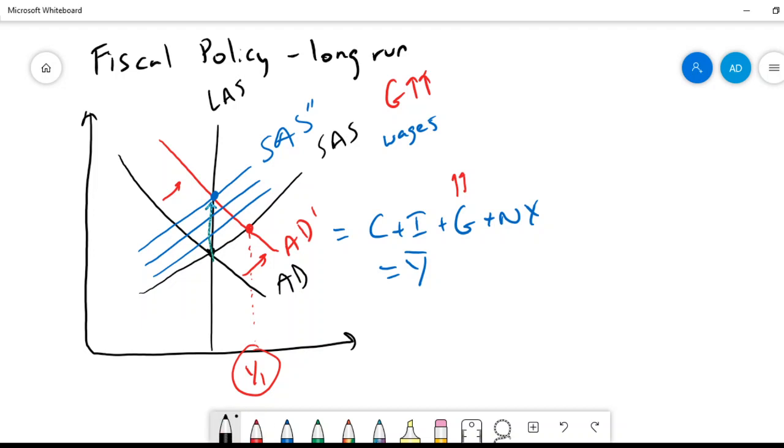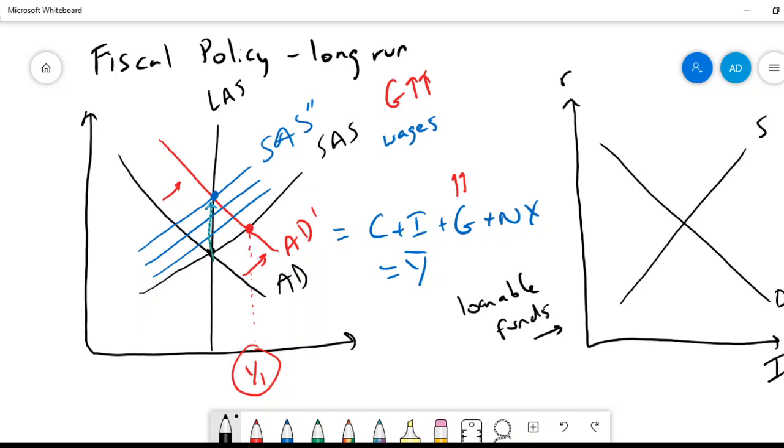Well, let's go back to our market for loanable funds. In the closed economy, we had a market for loanable funds that looked something like this. Demand for investment slopes down. National savings slopes up. In our loanable funds, what does government spending do?